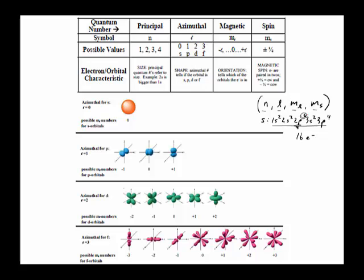It's kind of like a coding system, like a numbering scheme. The first number tells you the energy level, which is n. So it tells you what the principal energy number is.